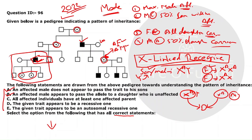Statement C: 'All affected individuals have at least one affected parent' — this is incorrect, because a son can be affected if his mother is a carrier, even though the mother herself is unaffected. Statement D: 'The given trait appears to be a recessive one' — correct. So statements A, B, and D are correct, making A-B-D the right answer.